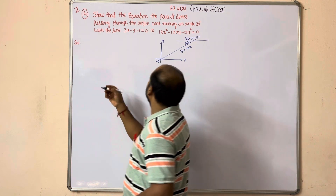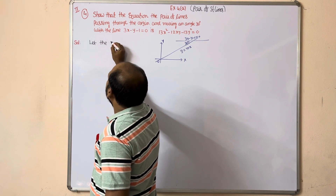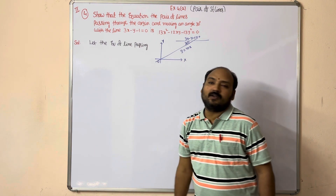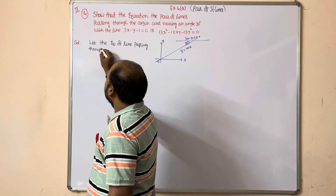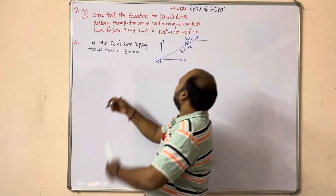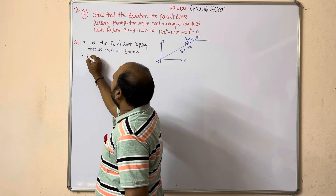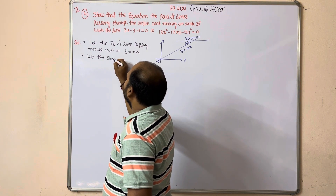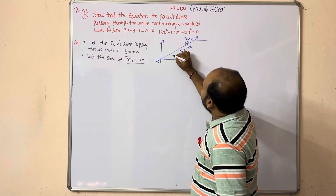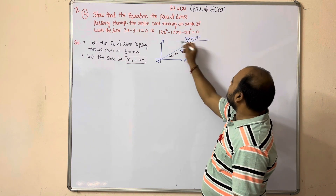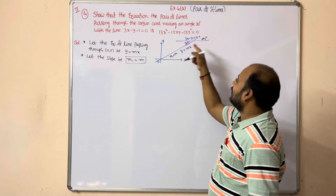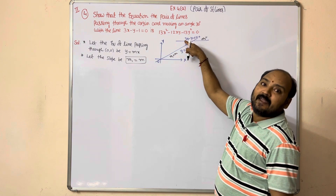Let the equation of the line passing through the origin be y equal to mx. So this is the line whose slope we are assuming. m1 equal to m - this is the first line's slope. For the second line, m2 is the slope of the given line 3x minus y minus 1 equal to 0, which gives m2 equal to minus a by b, that is minus 3 by minus 1, which equals 3.